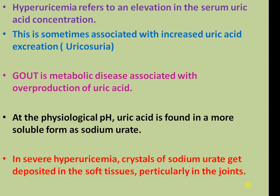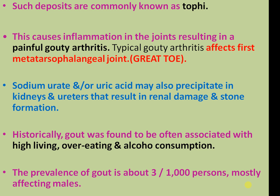Hyperuricemia refers to elevations in the Serum Uric Acid Concentration. This is sometimes associated with increased Uric Acid excretion, or uricosuria. Gout is a metabolic disease associated with the overproduction of Uric Acid. At physiological pH, Uric Acid is found in the more soluble form of sodium urate. In severe hyperuricemia, crystals of sodium urate get deposited in soft tissue, particularly in the joints, causing inflammation and resulting in painful gouty arthritis.